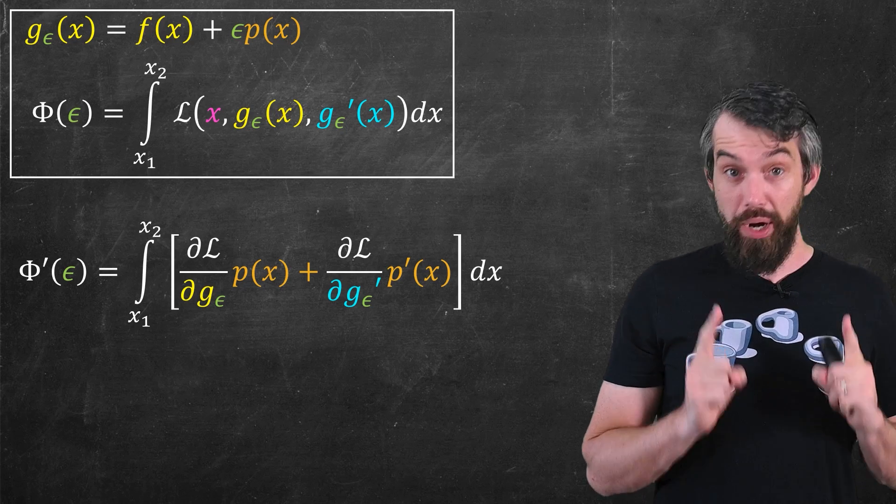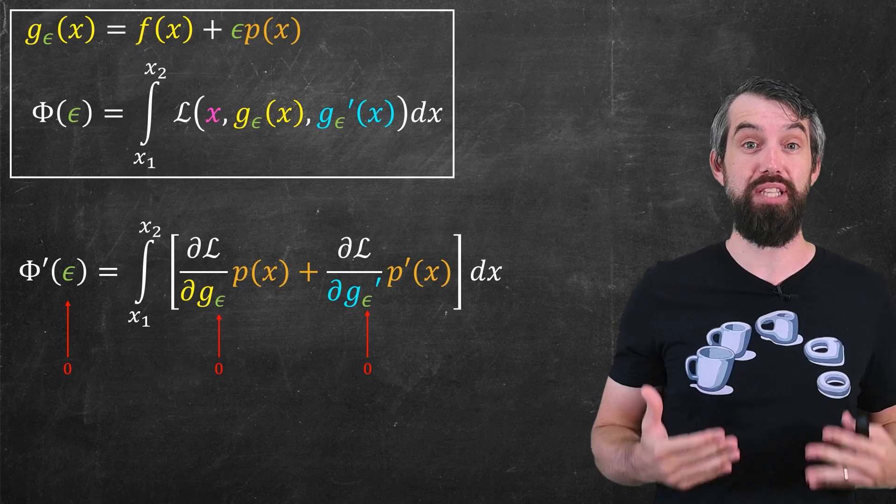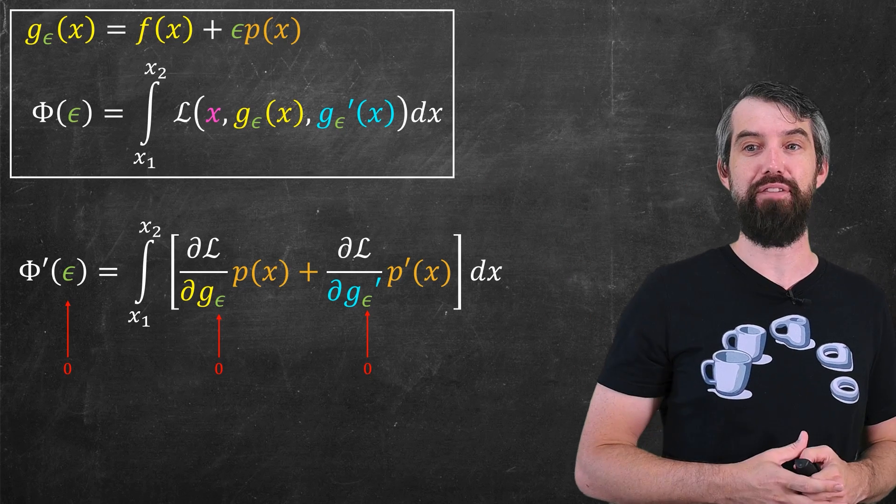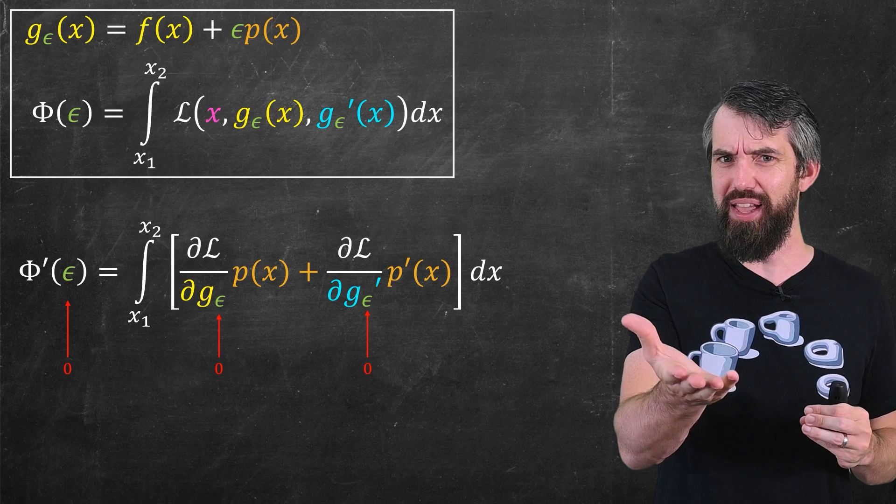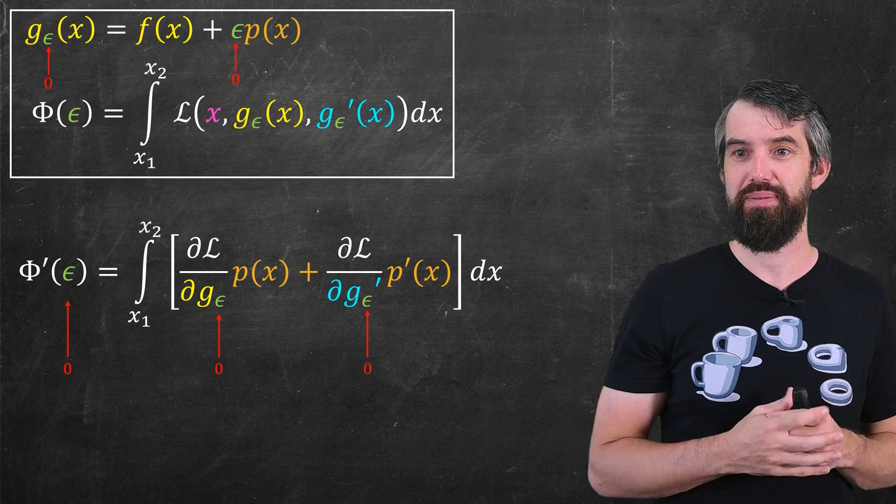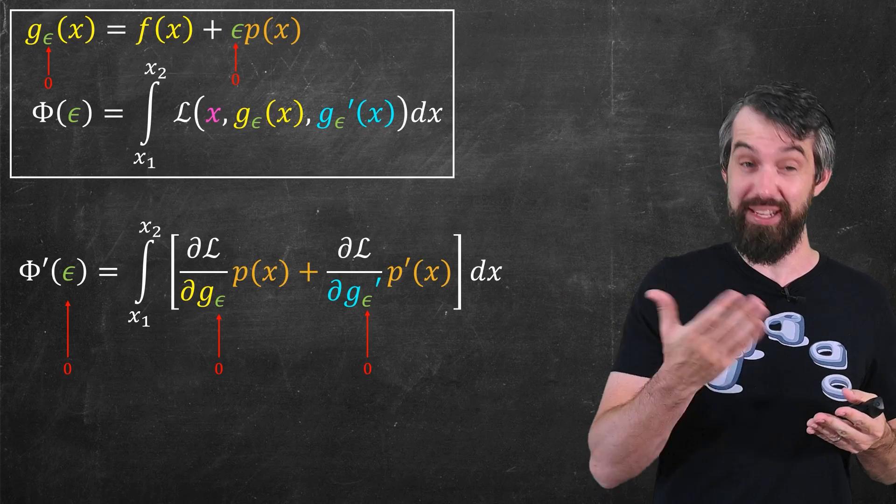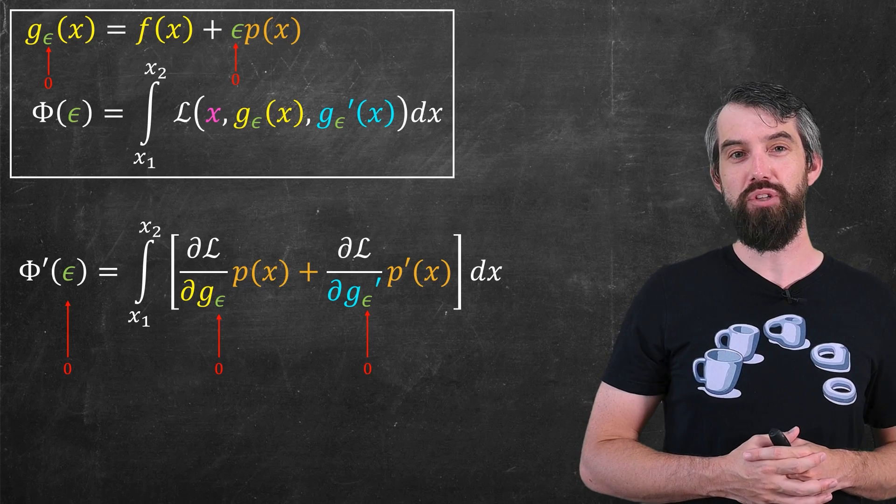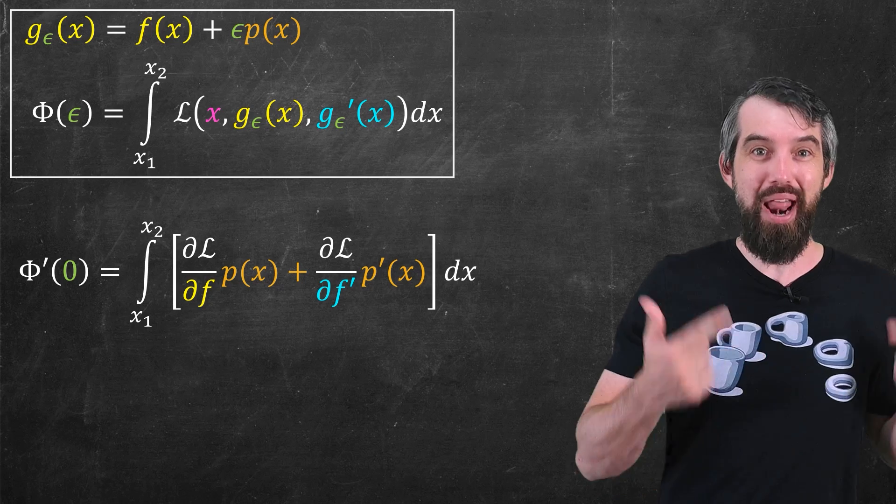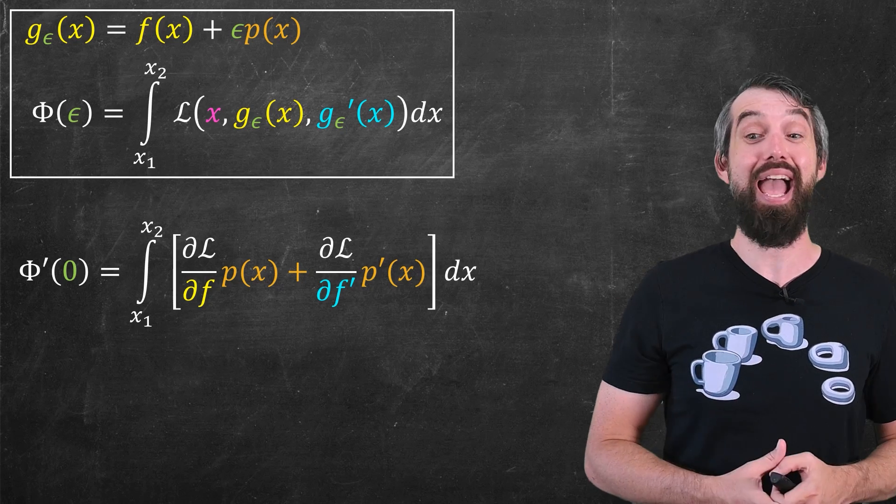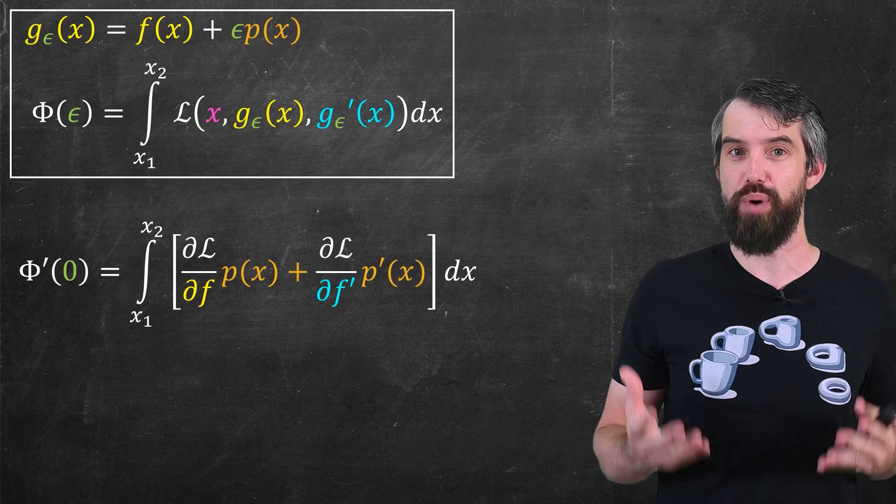So I can use those pieces of information to simplify my life quite a bit. Now, an important thing, we're going to be taking the derivative at zero. So I really care when ε is equal to zero, and if I go back to my definition of g, this is again g of zero, which is just the same thing as f(x). And the same for the g_ε, if I plug in zero here, this is just going to be f(x). So I'm going to switch my notation around here, respecting that when I'm doing this at zero, my g_ε is just going to be the same thing as f, and likewise my g'_ε is just the same thing as f'.